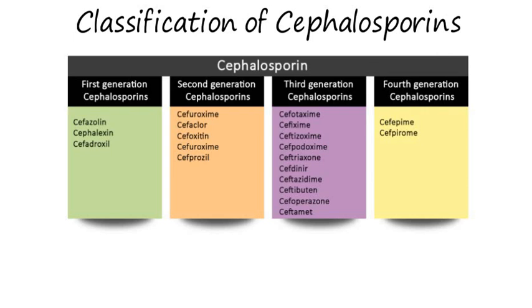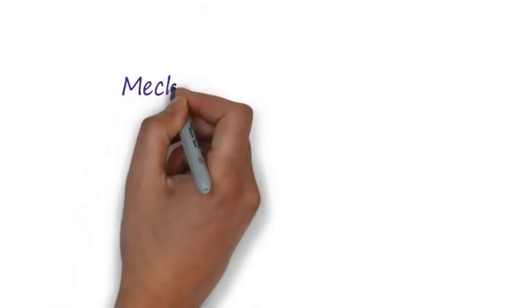On a usage basis, we have first generation cephalosporins such as cephalexin. Third generation is most important as it covers most of the microorganisms, so we can use them in a variety of infections in hospitals. Examples include ceftriaxone, ceftazidime, cefixime, and cefoperazone. Fourth generation cephalosporins also exist. You can find many other drugs and updated classifications in any textbook.